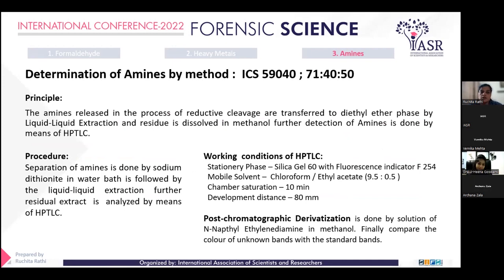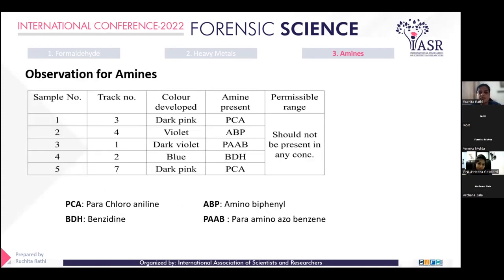The third analysis is the determination of amines, using the prescribed ICS method. The principle: amines released in the process of reductive cleavage are transferred to a diethyl ether phase by liquid-liquid extraction, and the residue is dissolved in methanol. Further detection of amines is done by HPTLC. After developing the HPTLC plate, chromatographic derivatization is performed. Regarding permissible range: amines should not be present in any concentration in any kind of fabric — not for baby clothing, not for adult or general clothing. However, after analysis, amines are found to be present in varying amounts across the samples.